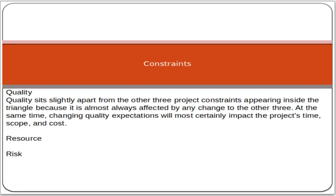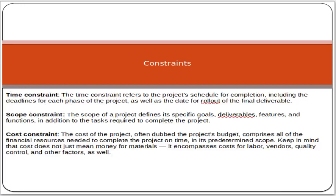Risk is another type of constraint. Risk means something uncertain – you are not sure whether it will happen or not. If it does happen, it can positively or negatively impact your project. So risk is another limitation and boundary that you must take care of.